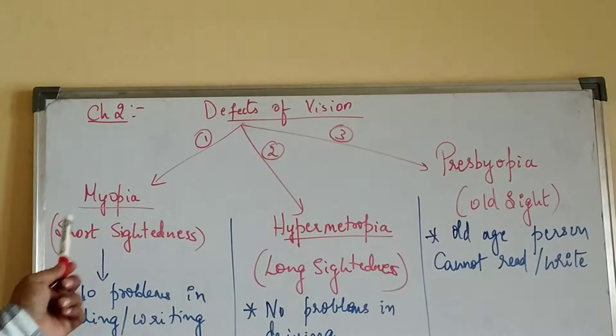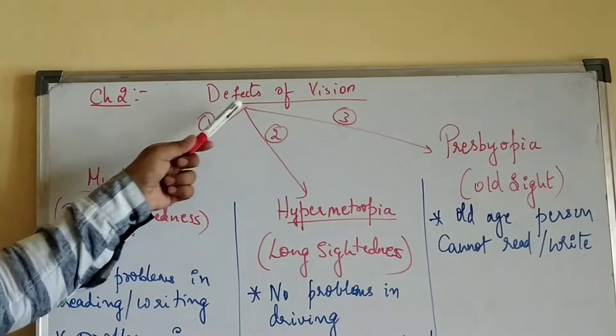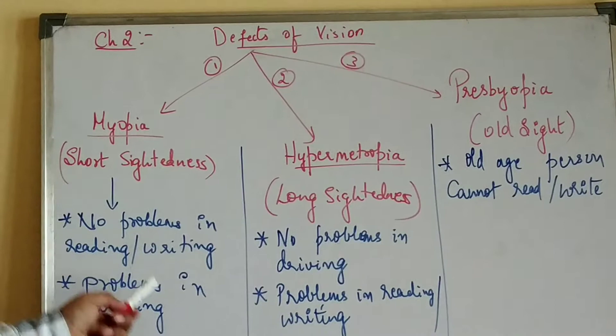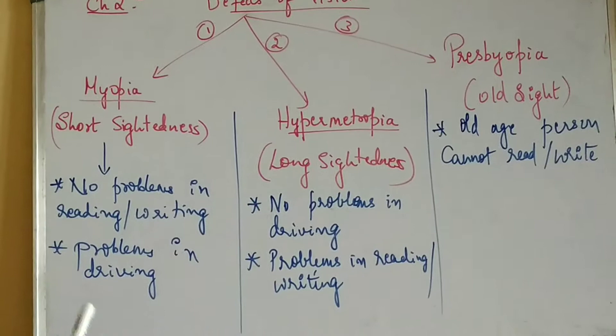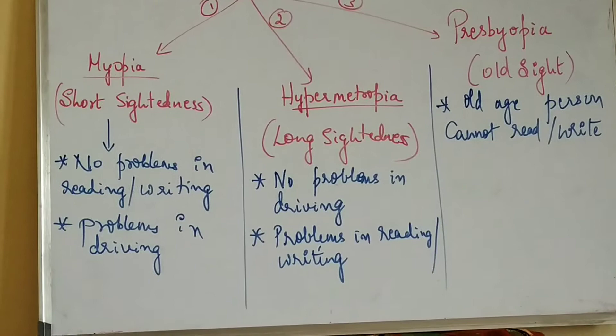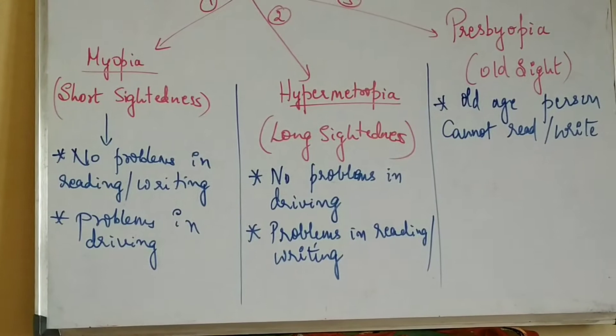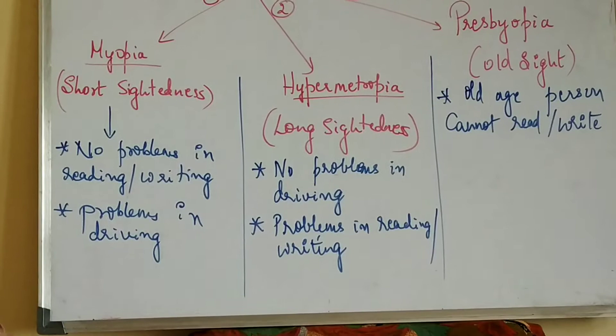We can classify defects into 3 categories. The first defect is called myopia or myopic eye. Myopia is also called short-sightedness. A person having myopia doesn't have problems in reading and writing — he can easily read and write at a very short distance — but he has problems in driving, meaning far away objects cannot be seen properly.